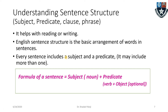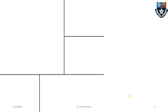Every sentence will include a subject and a predicate. It may include more subjects and predicates, but a full sentence should definitely have the structure of a subject and a predicate. The formula of a sentence: subject — which is a noun or pronoun — plus predicate — which is the verb — plus object, which is optional; it is not always necessary to have an object.